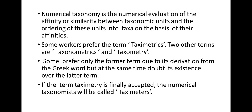Numerical taxonomy is the numerical evaluation of the affinity or similarity between taxonomic units and the ordering of these units into taxa on the basis of their affinities. Some workers prefer the term taximetrics. Two other terms are taxonometrics and taxonometry. If the term taximetrics is finally accepted, the numerical taxonomists will be called taximetres, taxonometrics, or taxonometry.